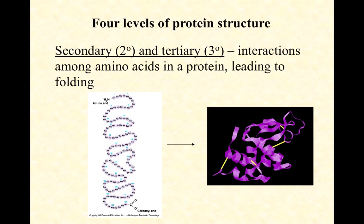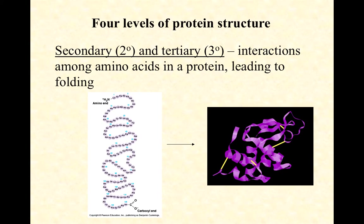Secondary and tertiary structures occur when interactions among amino acids cause the protein to fold. These interactions can be covalent bonds, ionic bonds, hydrogen bonds, or hydrophobic interactions — where hydrophobic R groups bury themselves toward the center of the protein, away from the aqueous phase, creating a strong folding pattern. For our purposes we won't distinguish between secondary and tertiary in detail.